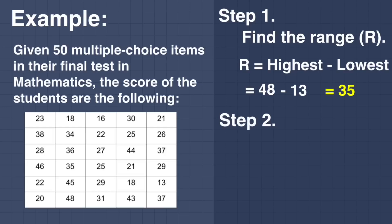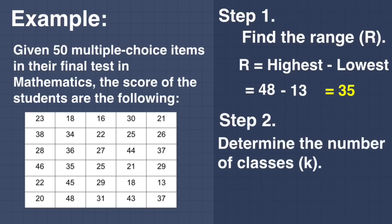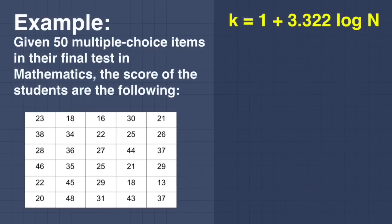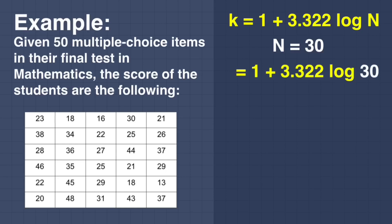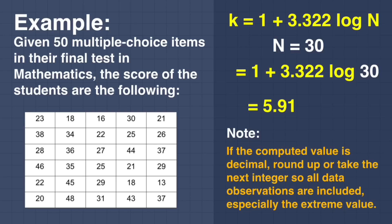For step number 2, determine the number of classes or K. We use the Sturge formula: K is equal to 1 plus 3.322 times logarithm of N. Since N is equal to 30, substituting gives 1 plus 3.322 times log(30), which equals 5.91 or approximately 6. Note: if the computed value is decimal, round up or take the next integer so all data observations are included, especially the extreme value.